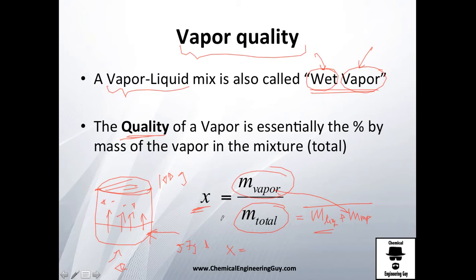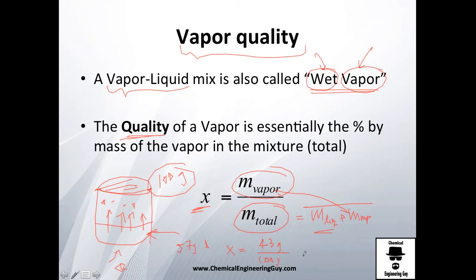We get the vapor mass as 100 minus 57, which is 43 grams of vapor. The total amount is 100 grams. So x equals 43 divided by 100, which gives 42–43 percent vapor quality. That means essentially 43 percent of the mixture is vapor.